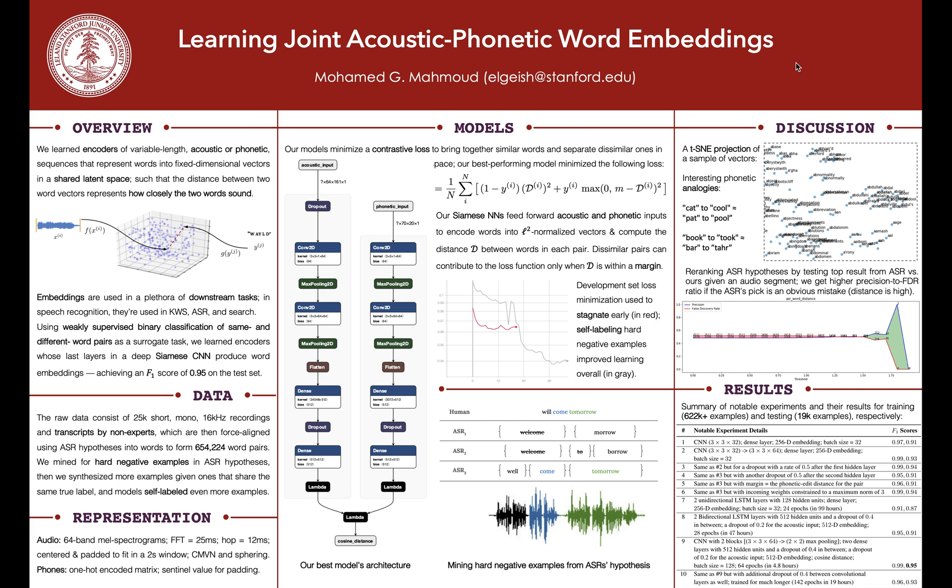With a distance function, we learn whether the loss should update if the pairs are matching or mismatching according to a true label. Rather than training on the actual distance as the label, we train on a simple binary label. The data comes from ASR hypotheses and non-expert humans transcribing about 25,000 short recordings.